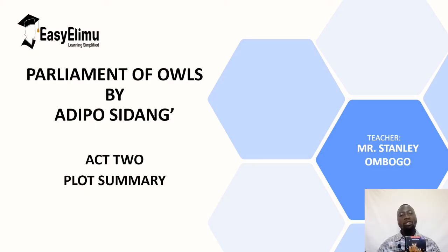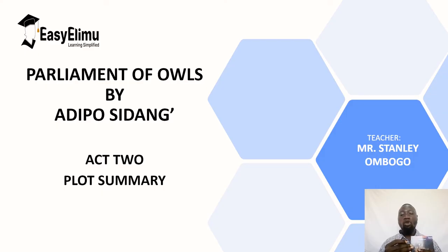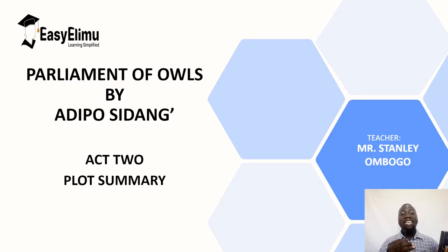Hello students, welcome to Easy Elimu Learning Simplified. I am your teacher Mr. Stanley Ombogo. This is a continuation of our Parliament of Owls plot analysis by Adipo Sidang. In this session we are going to look at Act Two plot summary, covering what happens generally and also identifying the major or key events in this act, which can sometimes be called striking events.